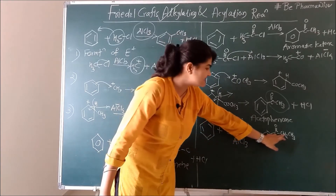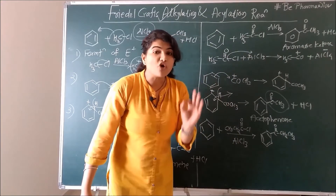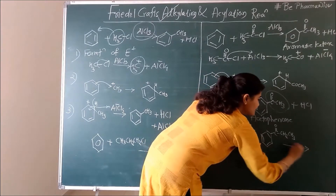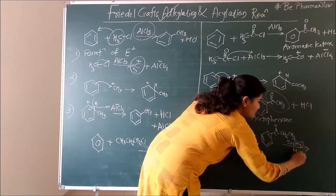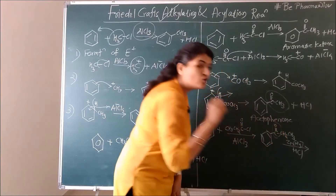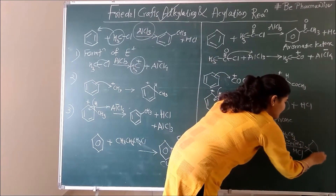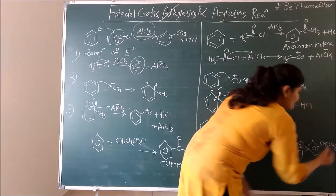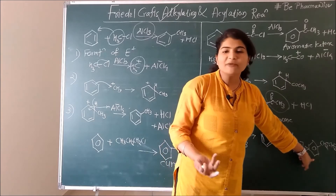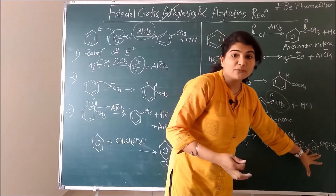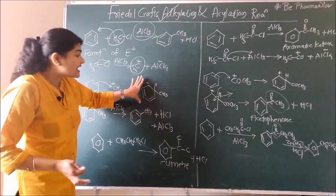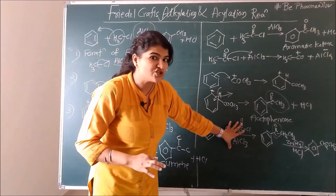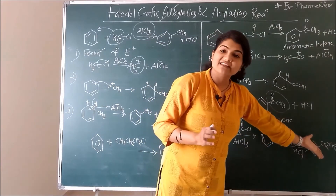Now we follow this with Clemmensen's reduction — treating this product with zinc amalgam and HCl. The C=O group undergoes reduction to form a CH2 group. So the CO is converted to CH2, and with the CH2-CH3 already there, you get N-propylbenzene. Our purpose is solved. We couldn't prepare N-propylbenzene using Friedel-Crafts alkylation because the carbonium ion was rearranging before reaching the final state, but we solved this by using Friedel-Crafts acylation followed by Clemmensen's reduction.